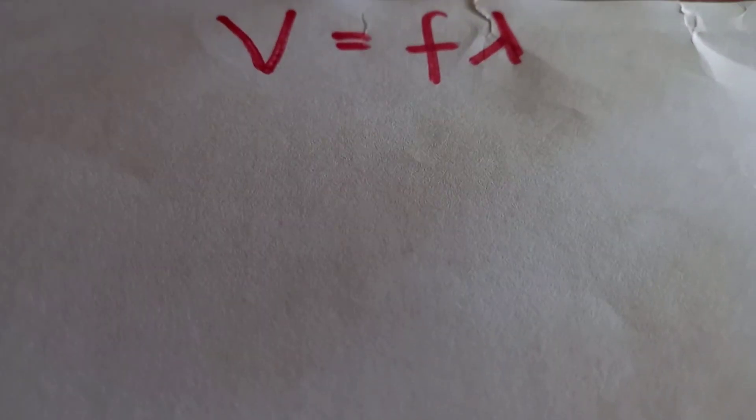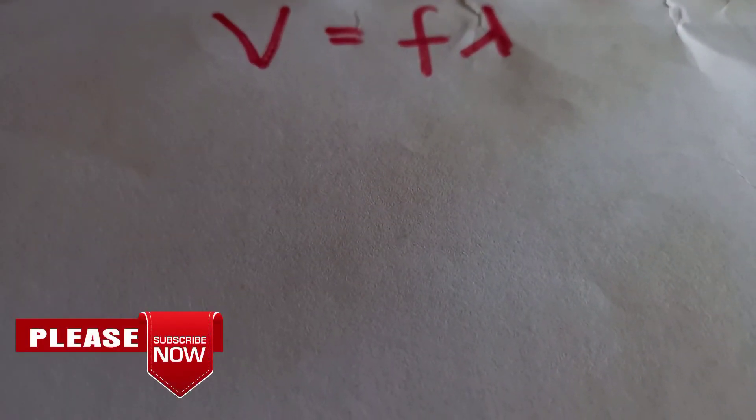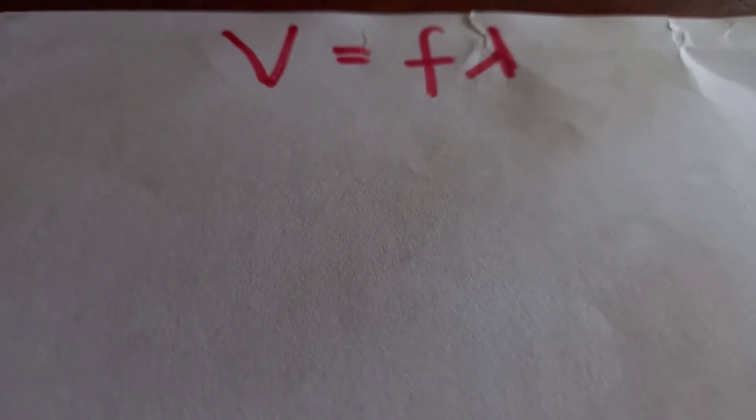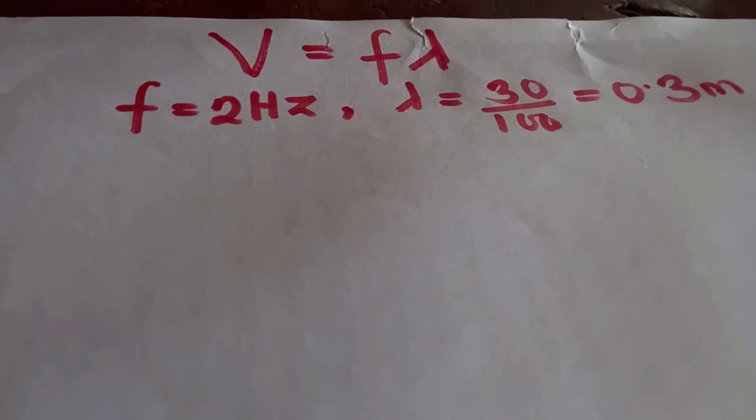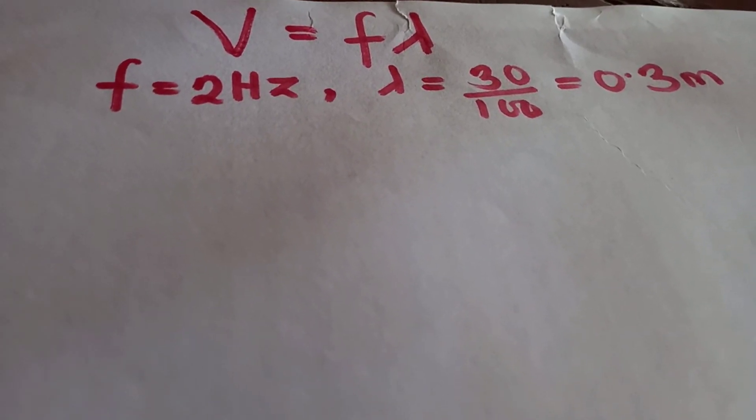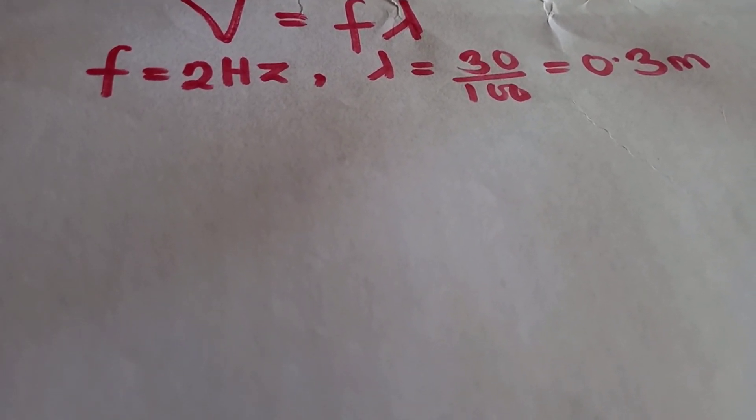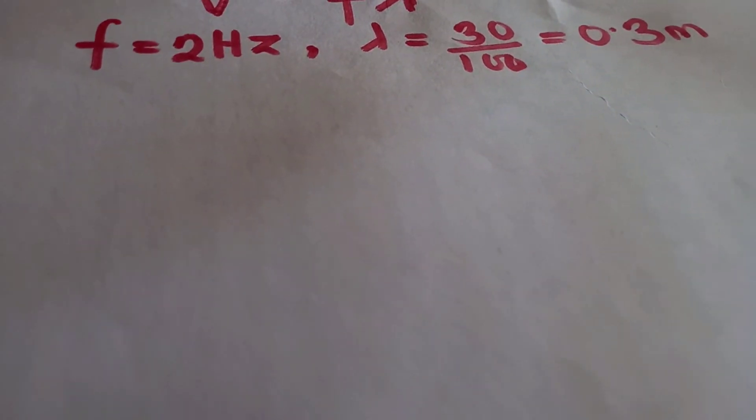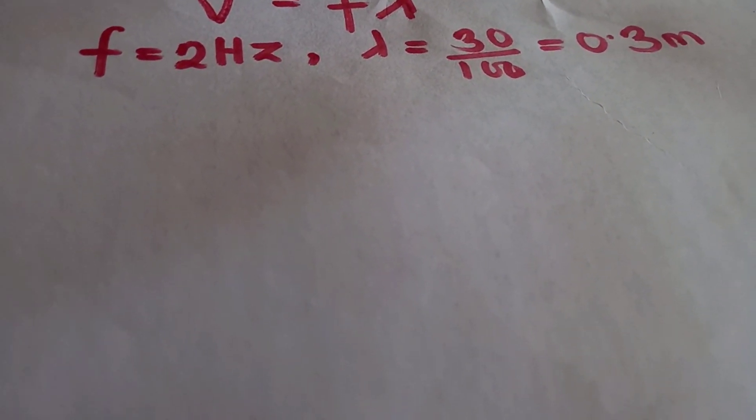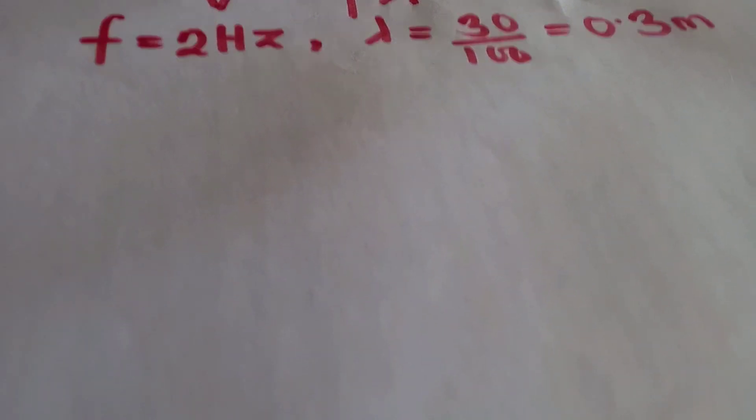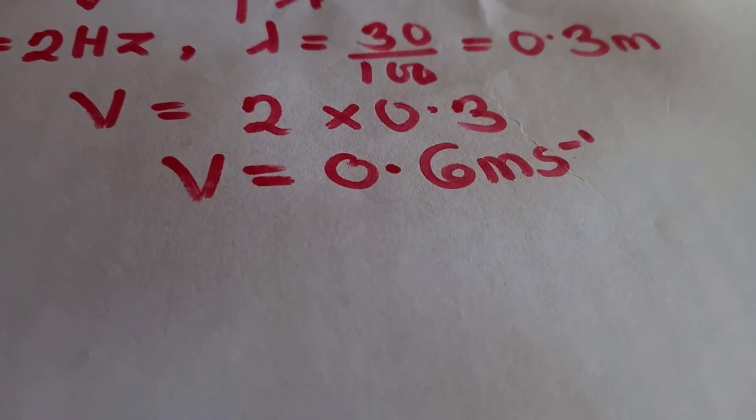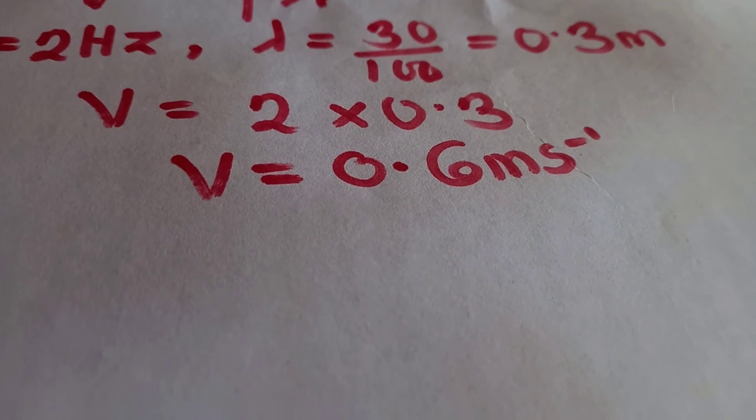The question uses the formula velocity equals frequency times wavelength. Frequency is 2 Hz, the wavelength is 30 centimeters. Converting it to meters, we divide by 100, so 0.3 meters. 2 times 0.3 gives us 0.6 meters per second. This is the value of the velocity of the wave.